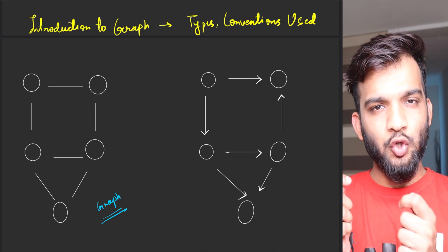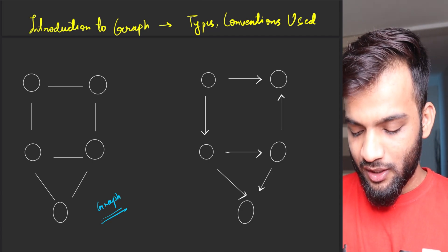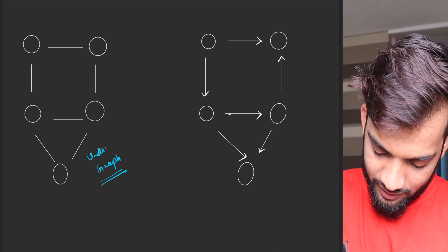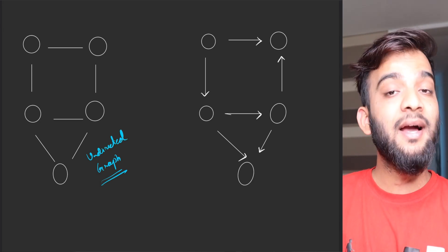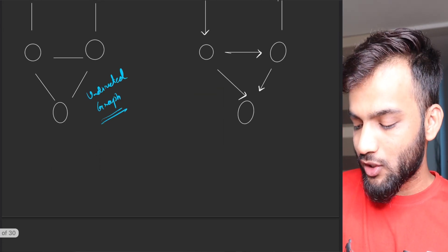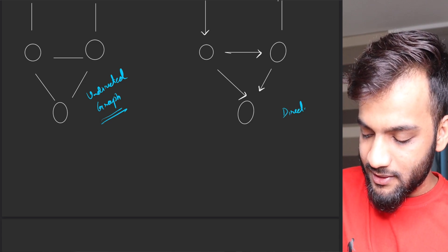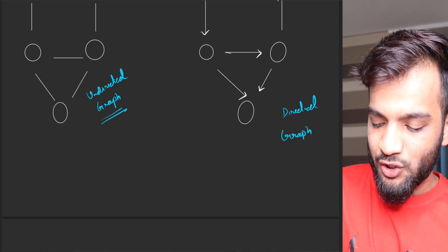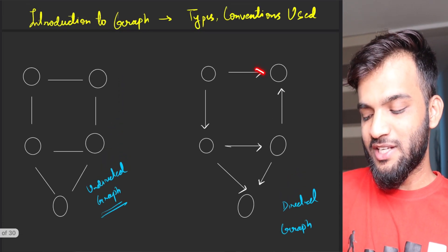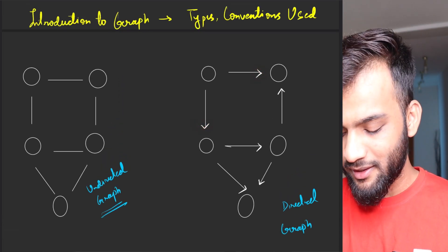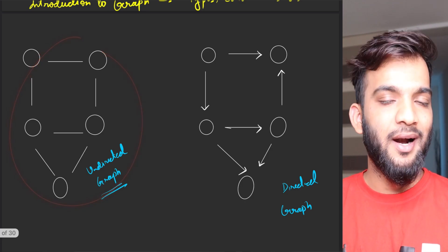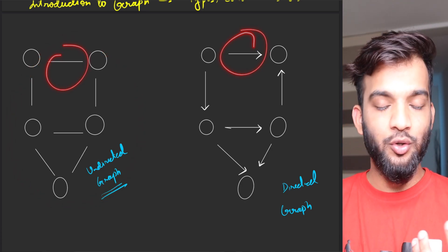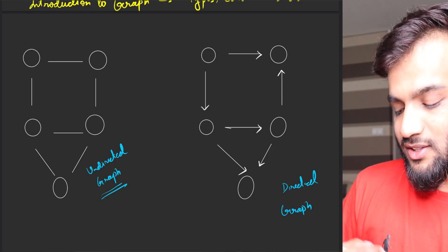Now let's talk about the types of graphs. This structure is known as an undirected graph, whereas this structure is known as a directed graph. You would have guessed why — because you see arrows over here, that is why it's called directed. You don't see arrows over here, that's why it's called undirected.